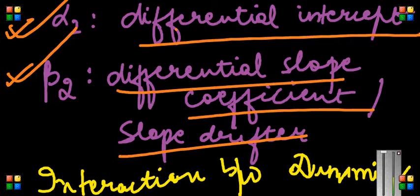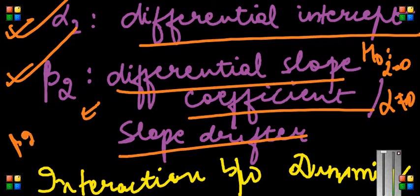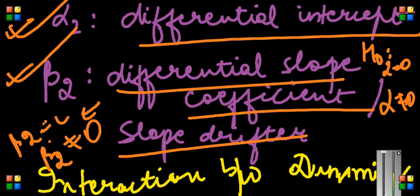So my null can be α_2 equal to 0 and alternative can be α_2 not equal to 0. Similarly, my null can be β_2 equal to 0, alternative β_2 not equal to 0, because I am not so sure about the direction. Although I assume that in a country saving should actually increase over time, but still if you are not sure about the sign, whether saving should actually increase or decrease, you can actually use a two-tail test.